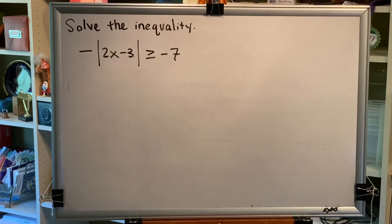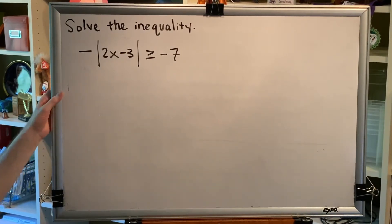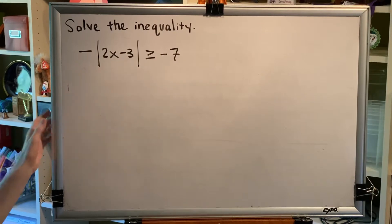The topic of this video is solving absolute value inequalities. Let's look at a problem. Solve the inequality: negative absolute value of 2x minus 3 is greater than or equal to negative 7.